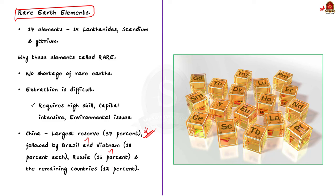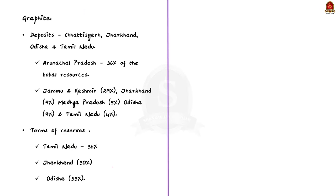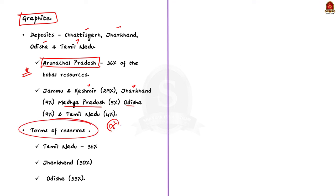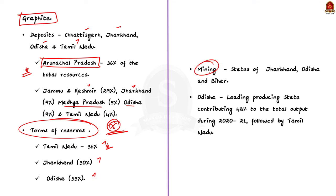Now let us analyze the distribution of some REE in India. Regarding graphite: deposits are located in Chhattisgarh, Jharkhand, Odisha and Tamil Nadu. Arunachal Pradesh accounts for 36% of total resources, followed by Jammu & Kashmir, Jharkhand, Madhya Pradesh, etc. With respect to reserves, Tamil Nadu has the largest share at about 36%, followed by Jharkhand and Odisha. With respect to mining, it is carried out in Jharkhand, Odisha and Bihar; Odisha is the largest producing state contributing 42% of total output, followed by Tamil Nadu.